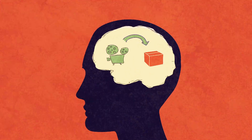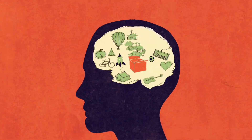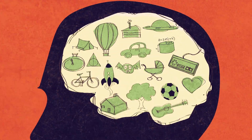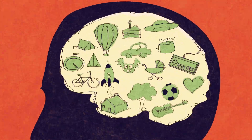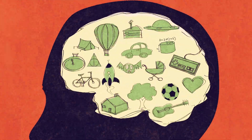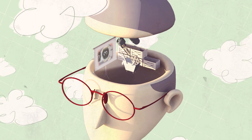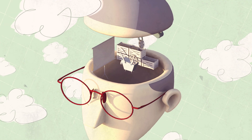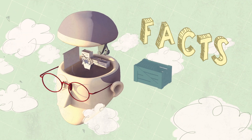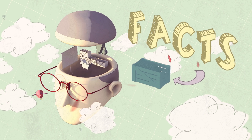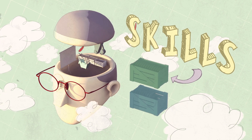One big difference in the brain: memories are stored almost everywhere. What we think of as a single memory is actually a collection of individual pieces of memory stored in different parts of the brain. Also, we have two very different kinds of memories — declarative memories, generally for facts, and procedural memories, usually for skills.